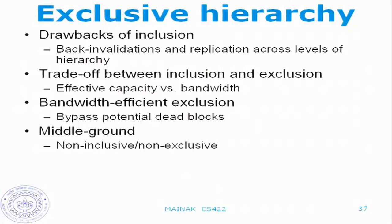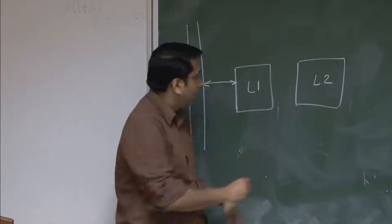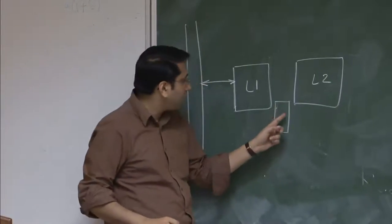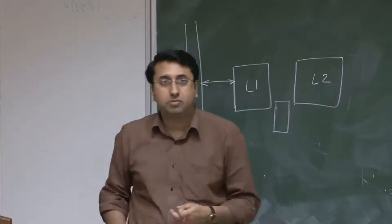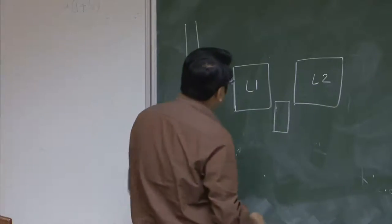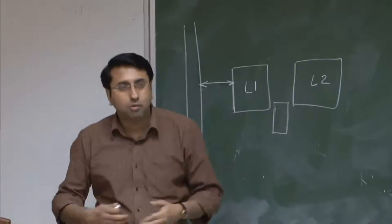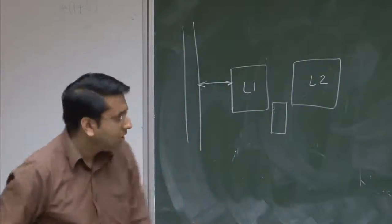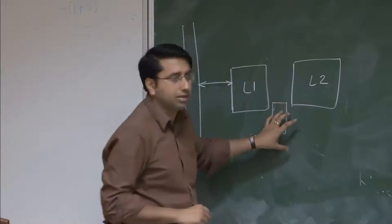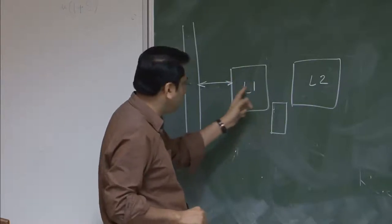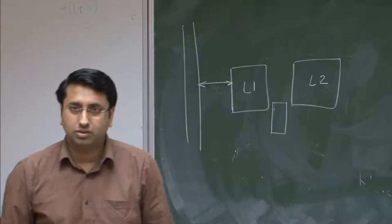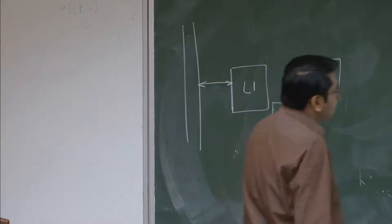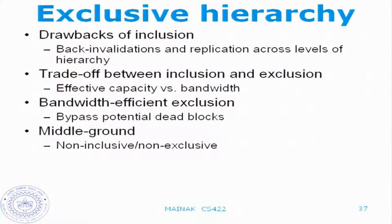It is possible to make exclusive caches bandwidth efficient. The idea is that when you evict a block from L1, you put a pattern learner here which will monitor the blocks getting evicted from L1 and figure out which blocks are not likely to be reused in the future. Those blocks will not go to L2 — they will just be dropped. The idea is that you monitor the accesses inside L1 of these blocks, and based on that you decide whether the block is dead or alive.